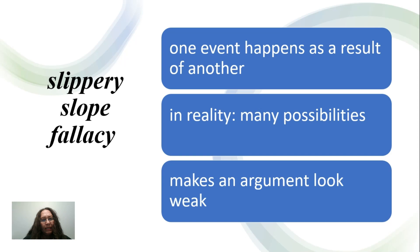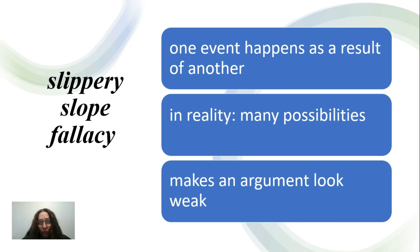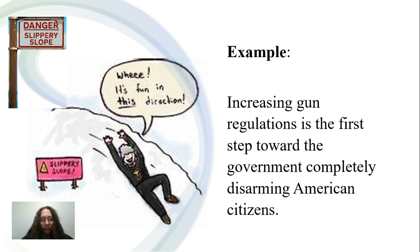Another type of fallacy is the slippery slope fallacy. In this case, the error is based on the fear that once a move is made in one direction, we will necessarily have to continue to slide in that direction. So while one action may in fact lead to some similar actions, the slippery slope fallacy appeals to fear by claiming that a certain moderate action will lead to more extreme actions.